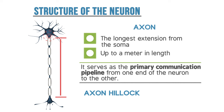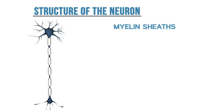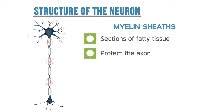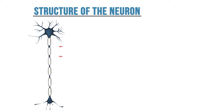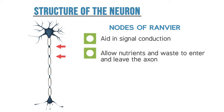The axon hillock is the junction that connects the axon to the cell body. Covering the axon are myelin sheaths. Myelin sheaths are sections of fatty tissue that help to protect the axon and also help to speed up signal conduction along the axon. The gaps between myelin sheaths are called the nodes of Ranvier. These also aid in signal conduction, and they also allow nutrients and waste to enter and leave the axon.